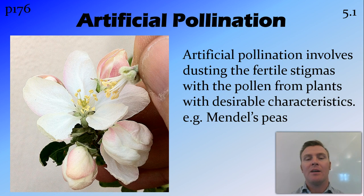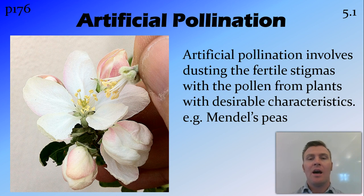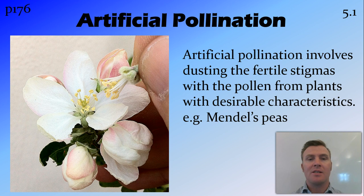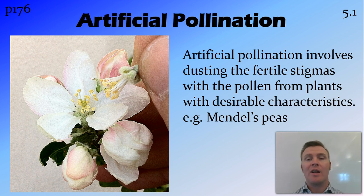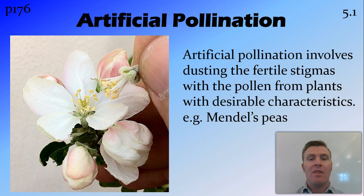A similar reproductive technology for plants is artificial pollination. This involves getting the stigmas from plants and dusting those with the pollen from other plants that all have desirable characteristics. A great example of this is Mendel's peas — to avoid any cross-pollination, all his peas were artificially pollinated. He actually went as far as cutting off the stigmas and the anthers of the peas, the mother and father peas, that he wanted to use so that they didn't pollinate themselves.